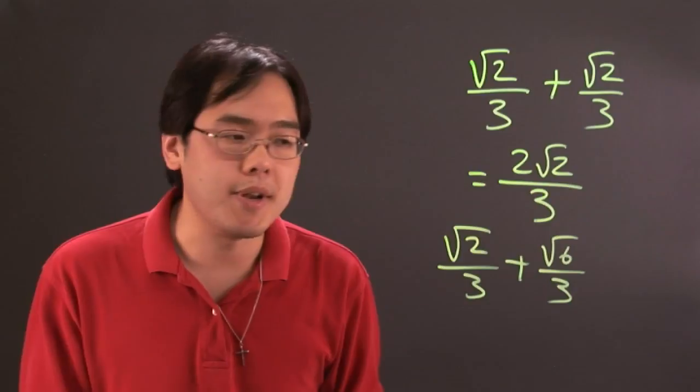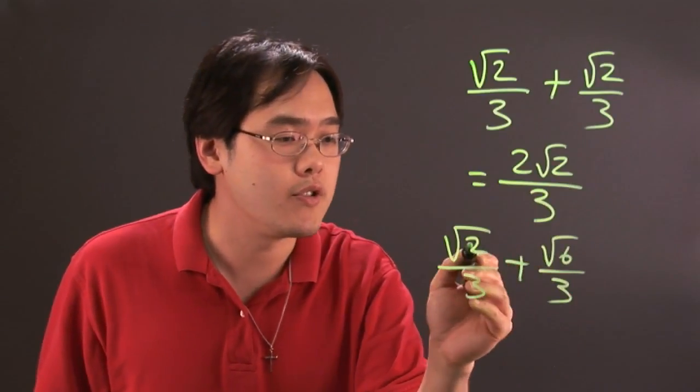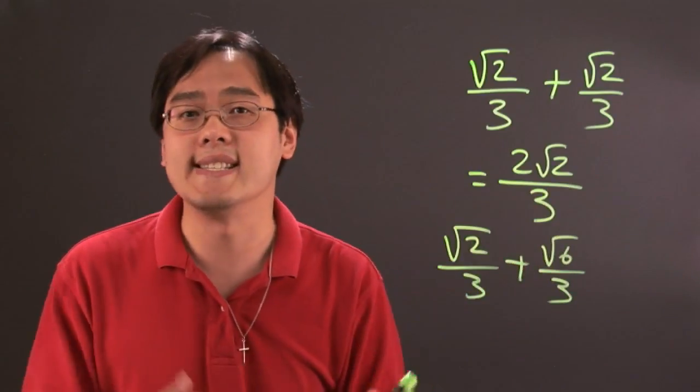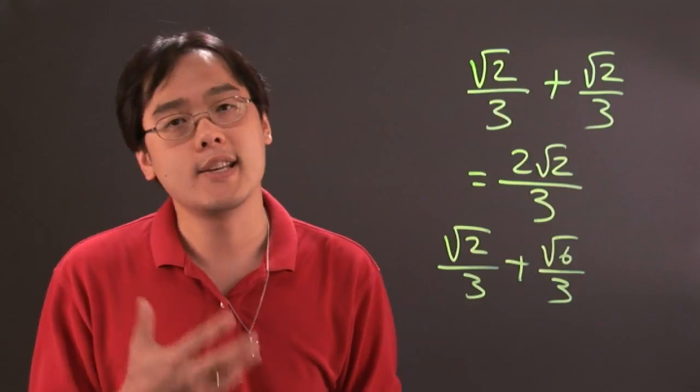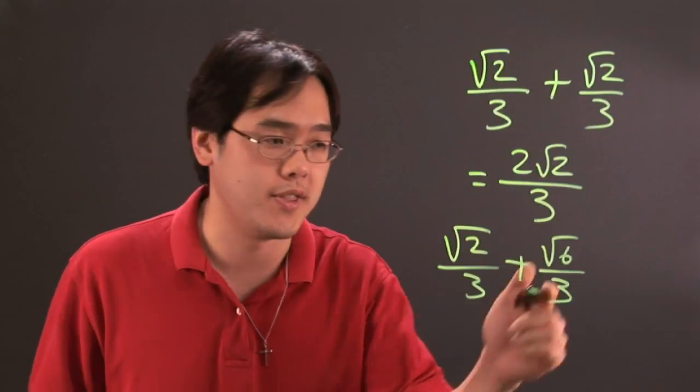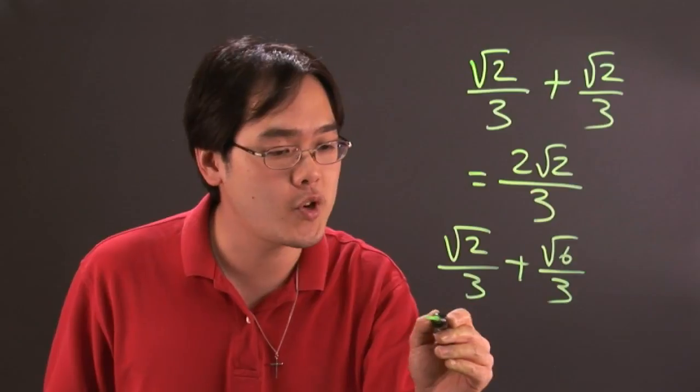They have the same denominator, but the number underneath the radical is actually different. In this case, you really cannot combine them because the numbers are different underneath the square roots. So you don't have much of a choice.